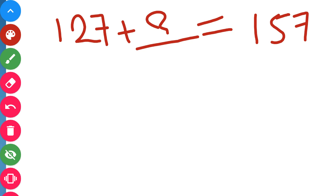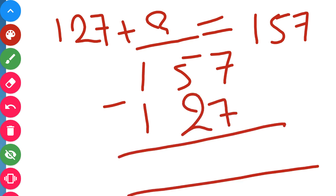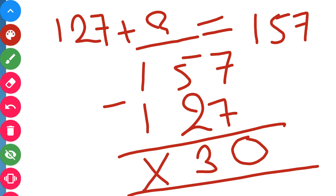We will do subtraction to find the answer — 157 minus 127. 7 minus 7 gives 0, 5 minus 2 gives 3, 1 minus 1 gives 0. So the answer is 30. If we add 30 to 127, we will get 157.